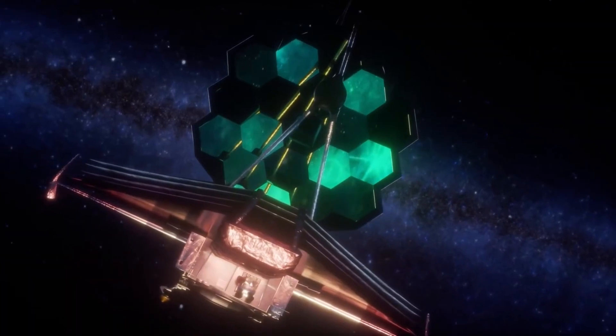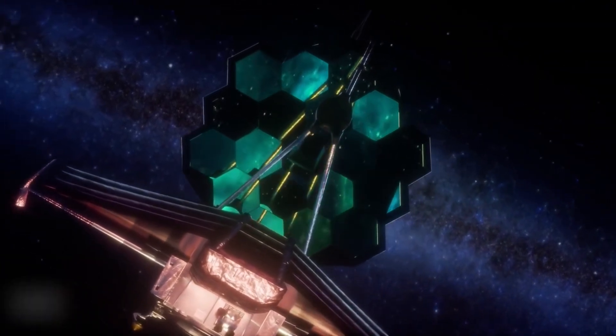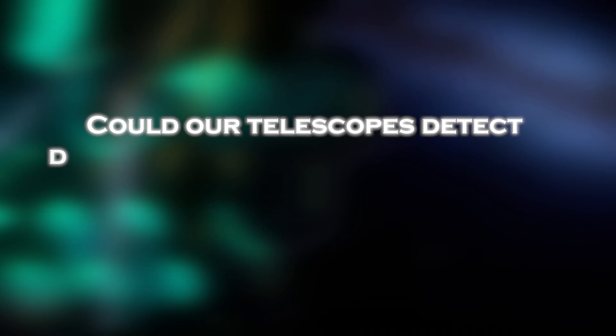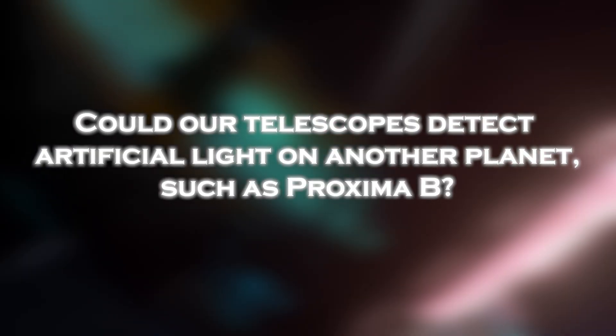In 2021, the James Webb Space Telescope posed a hypothetical question about the future capabilities of our technology. Could our telescope detect artificial light on another planet, such as Proxima b?